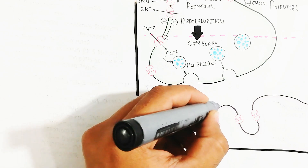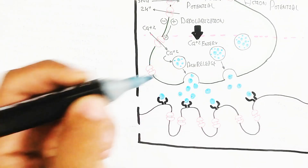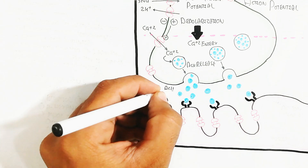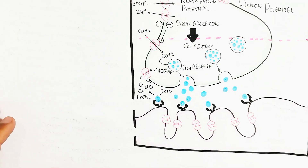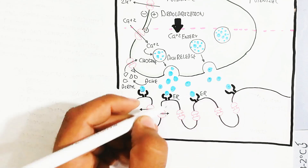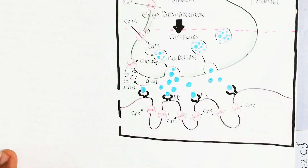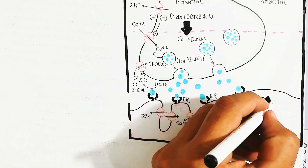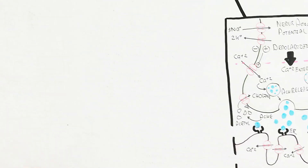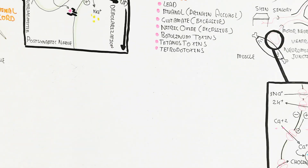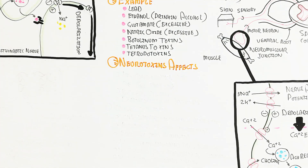The acetylcholine neurotransmitter vesicle is released and binds to the acetylcholine receptor. This leads to an influx of sodium, which triggers calcium in the t-tubules. The t-tubules lead to calcium moving inside, and the endoplasmic reticulum is activated to release calcium into the cytoplasm. This calcium binds with troponin in the actin filament, leading to muscle contraction. This is the basic overview of normal neuromuscular function.